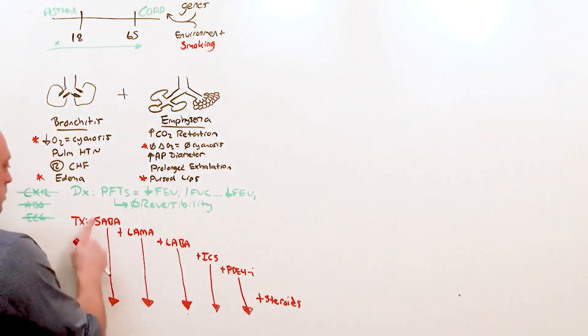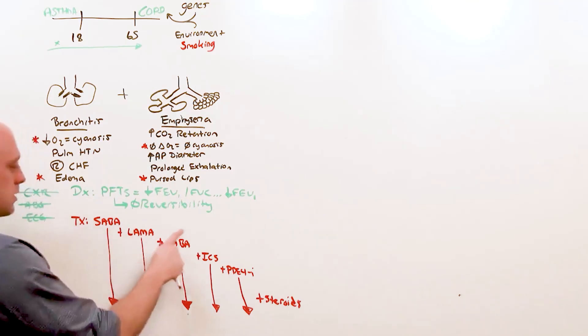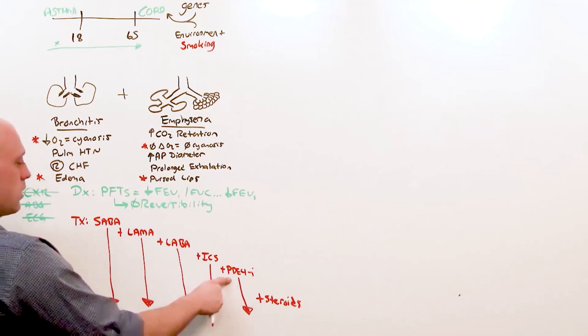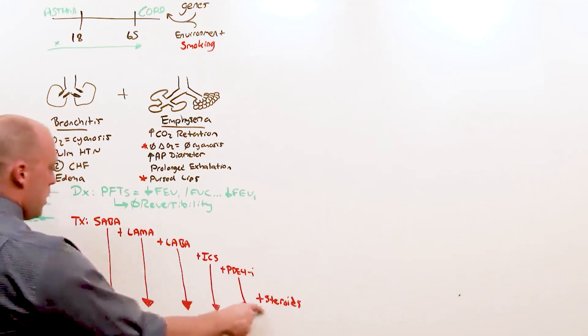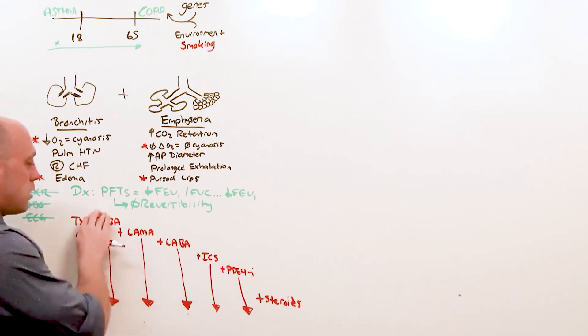This is the easy version: albuterol, tiotropium, any long-acting beta agonist, any inhaled corticosteroid, any phosphodiesterase-4 inhibitor, add steroids. In reality, what you're going to do is be using short-acting bronchodilators.